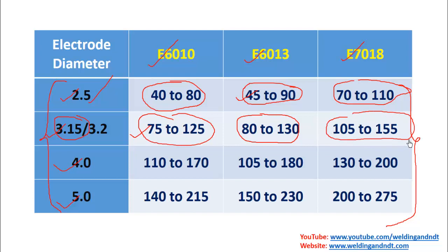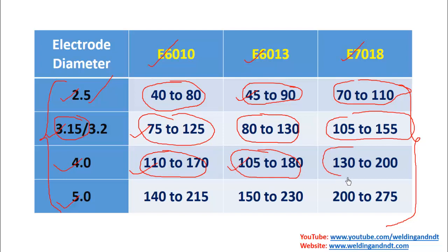For 4.0mm diameter electrode: E6010 current range is 110 to 170 amperes, E6013 current range is 105 to 180 amperes, and E7018 current range is 130 to 200 amperes.